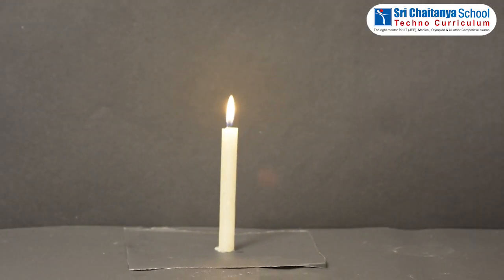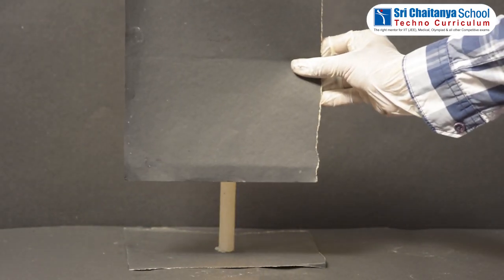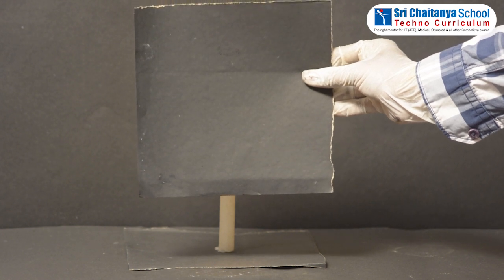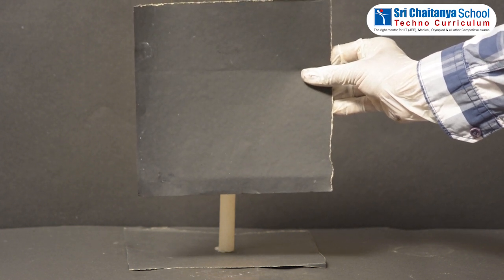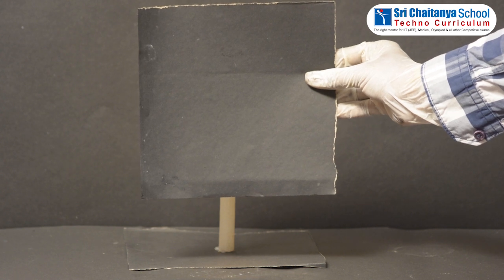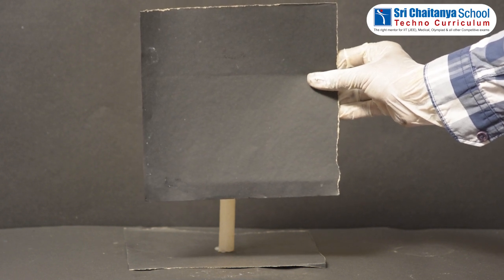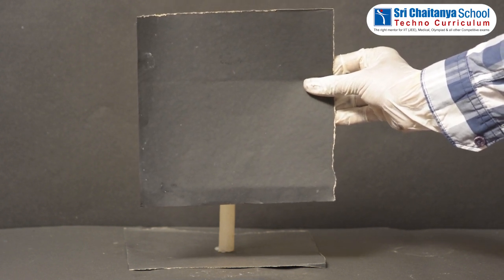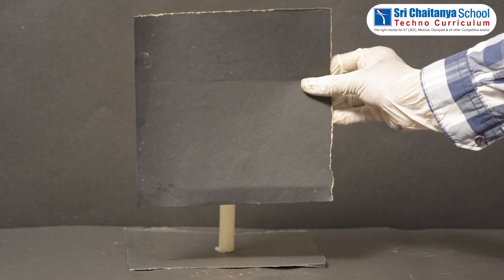Then, use cardboard sheet and observe. So, can you see the lighted candle now? No, because as cardboard sheet is opaque in nature, we cannot observe the lighted candle.